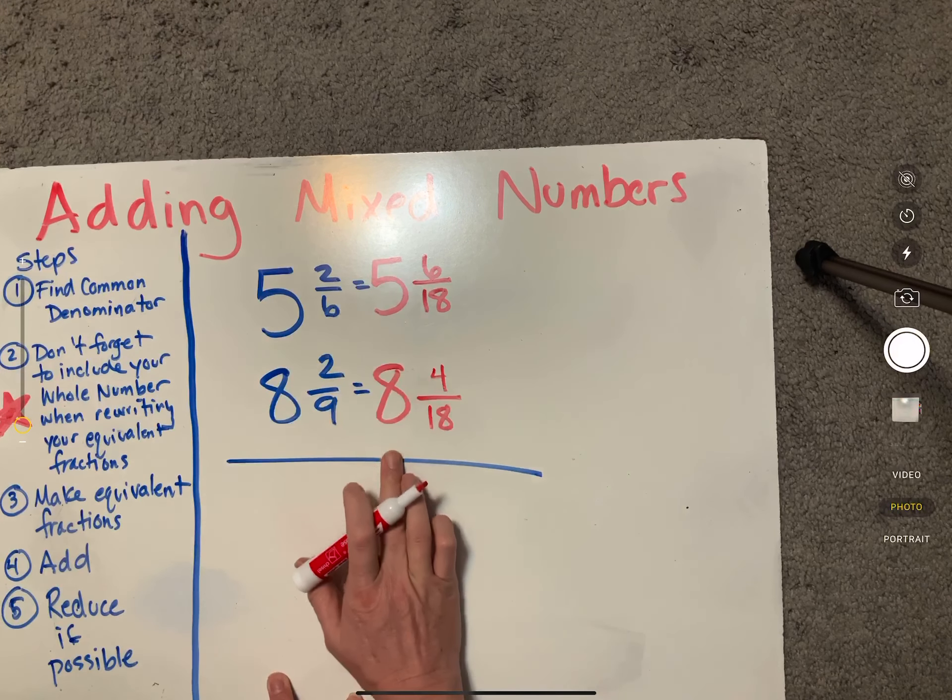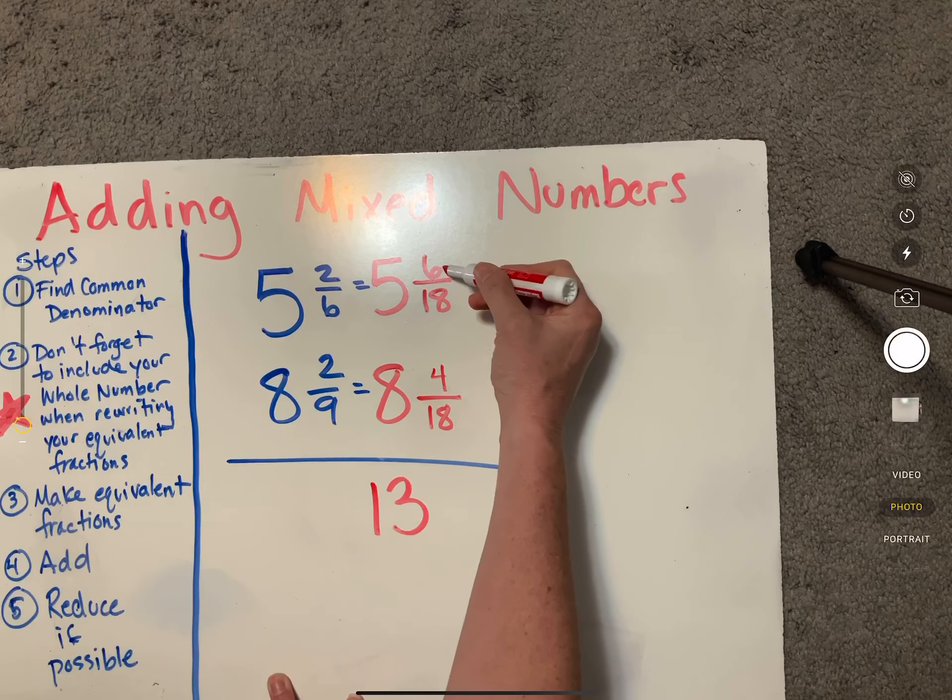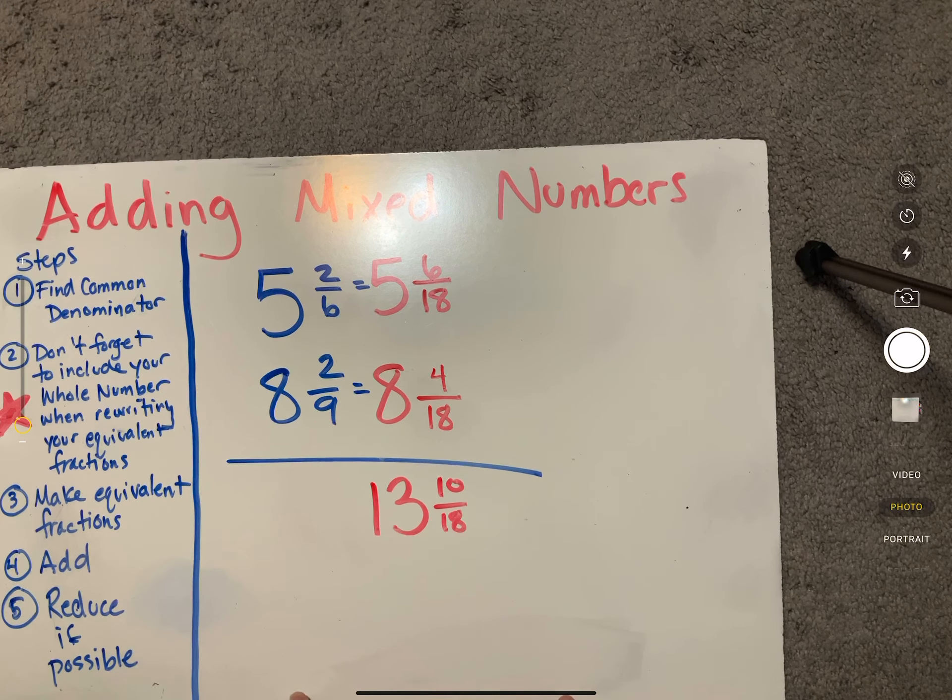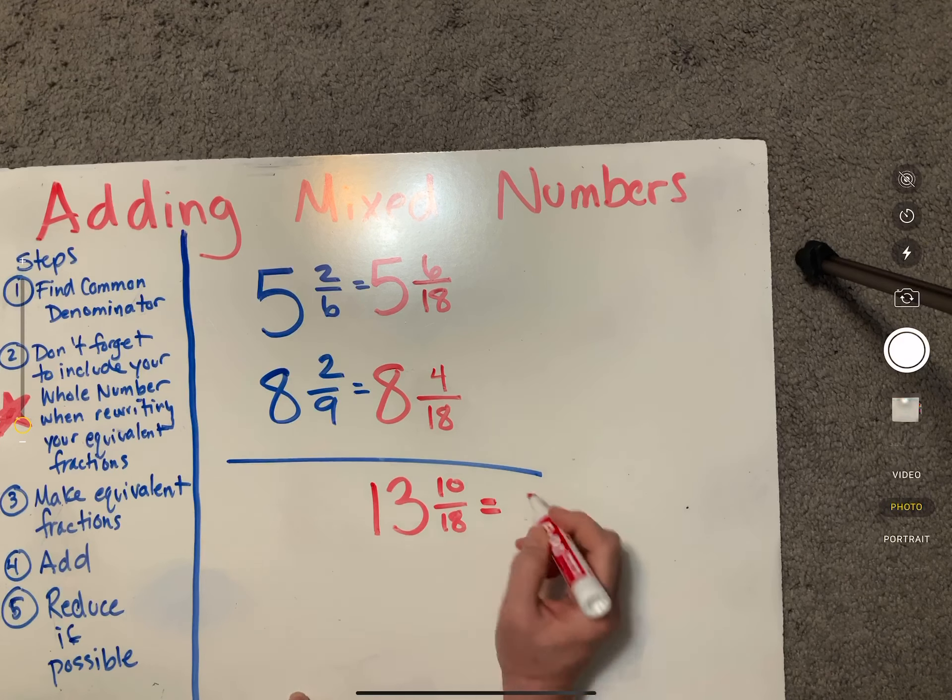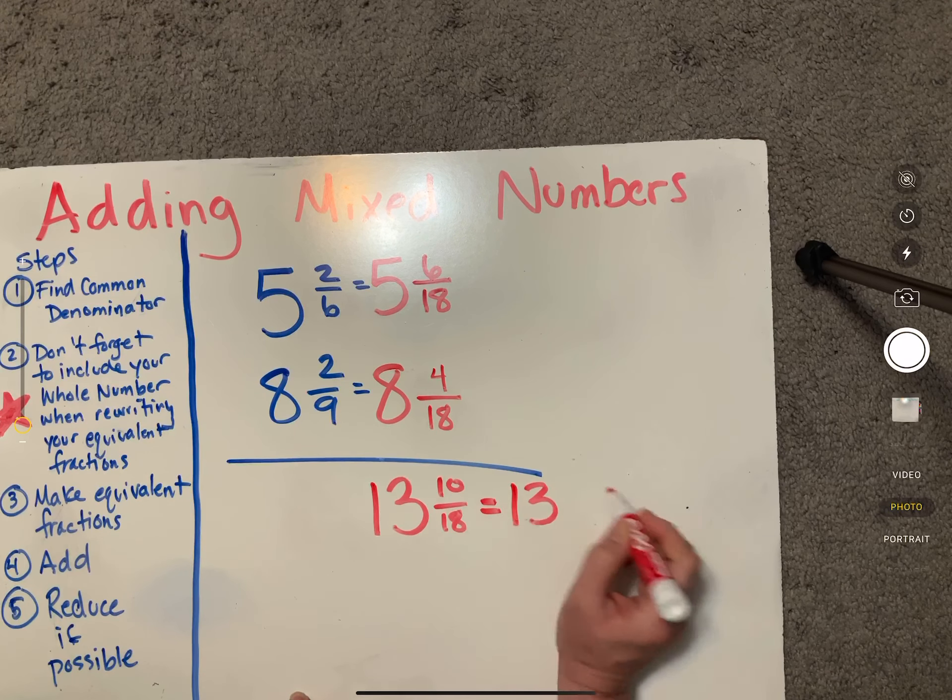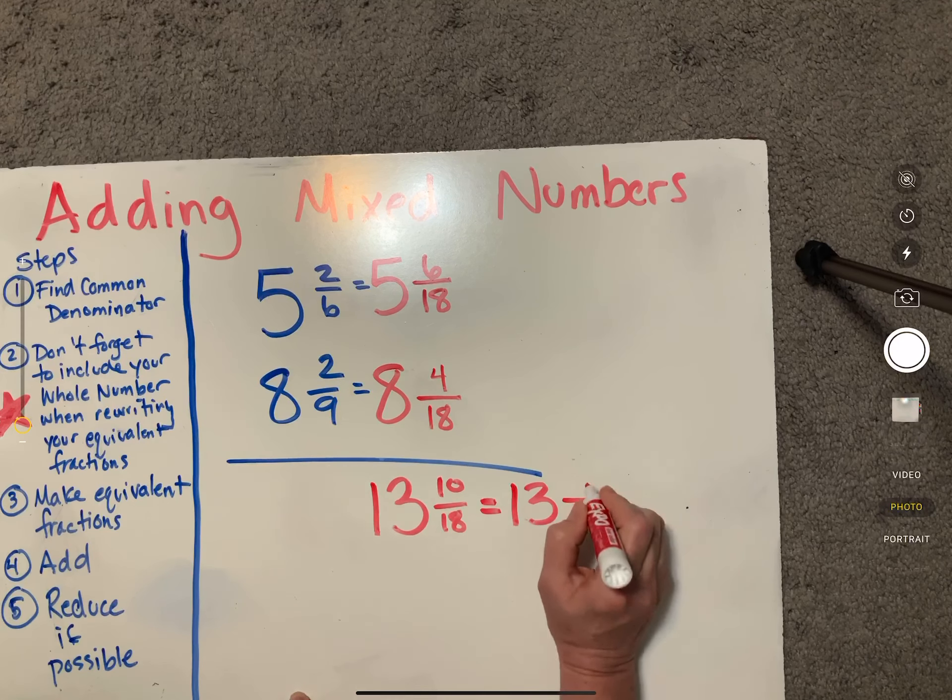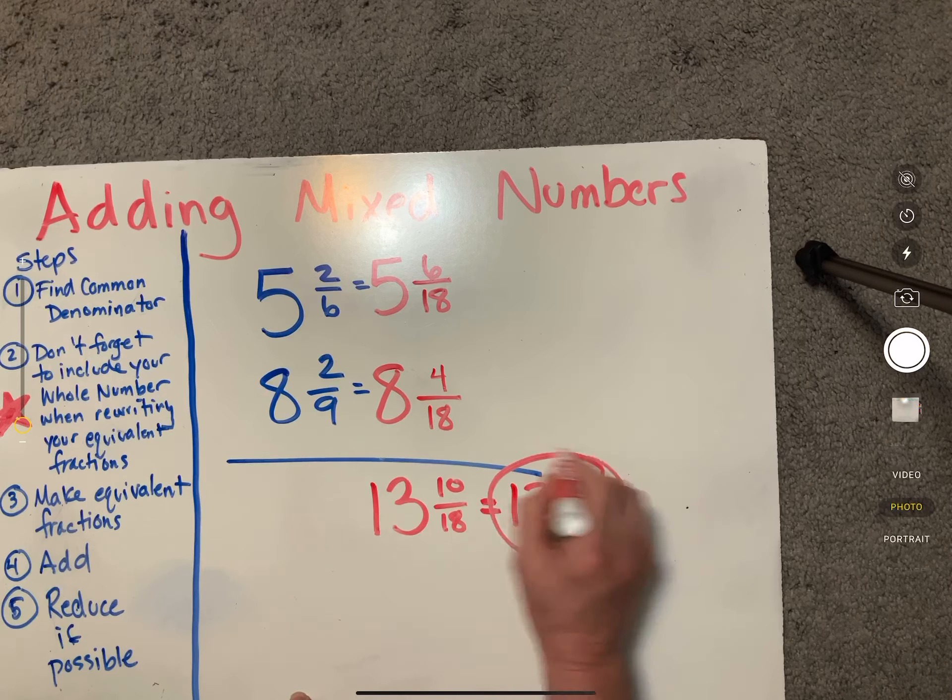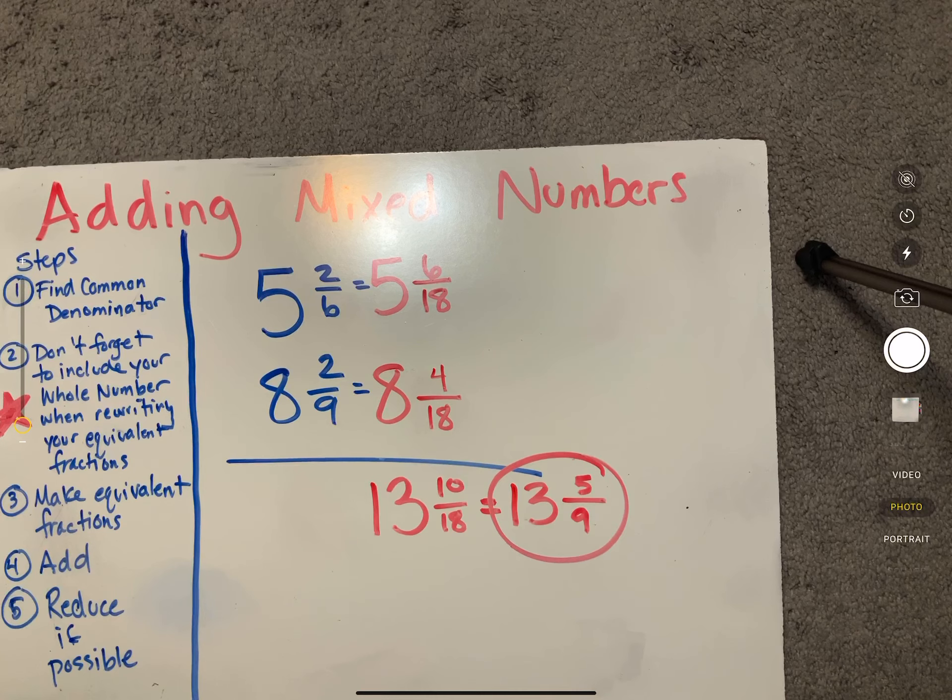Now just like before we're going to add our fractions up. Five plus eight is 13. Six plus four is 10, and 18 is our denominator. This is not in lowest terms though, so we'd have 13 and I can reduce both of these by two. So five ninths. Please circle your answer. 13 and five ninths would be my answer for this problem.